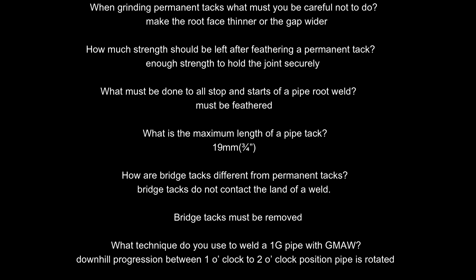What must be done to all stops and starts of a pipe root weld? They must be feathered. What is the maximum length of a pipe tack? 19 mm, three-quarters inch. How are bridge tacks different from permanent tacks? Bridge tacks do not contact the land of a weld, and bridge tacks must be removed.